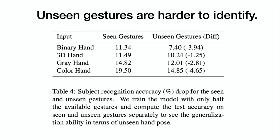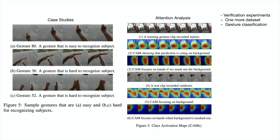So far, we assumed that all gestures are included in the training set. But we also experimented with another split dividing seen gestures and unseen gestures. Our results indicate that there is an accuracy drop for unseen cases, but it is still possible to identify some subjects. In addition, in the paper we showed several more analyses, including a case study on which gestures are easy or harder to identify, attention map analysis of the CNNs, and verification experiments. Please read our paper for the details.